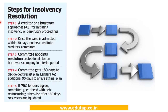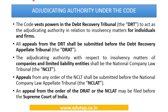To summarize the process: the creditor or borrower approaches the adjudicating authority; once the case is admitted, insolvency professionals are appointed with 180 days plus 90 days to draft a debt recast or insolvency resolution plan. If 75% of the lenders agree to the plan, restructuring happens; otherwise, the company's assets are liquidated.